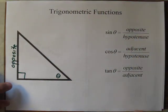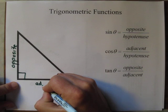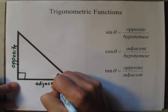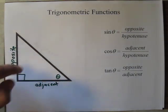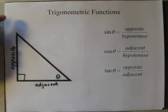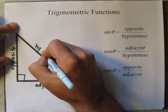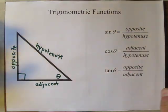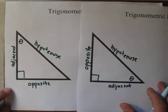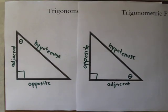Next to it, the adjacent side is down here. The hypotenuse is still the hypotenuse because it's across from, or opposite, the right angle. When we compare these two triangles, we see how the placement of theta can alter where our opposite and our adjacent side is.